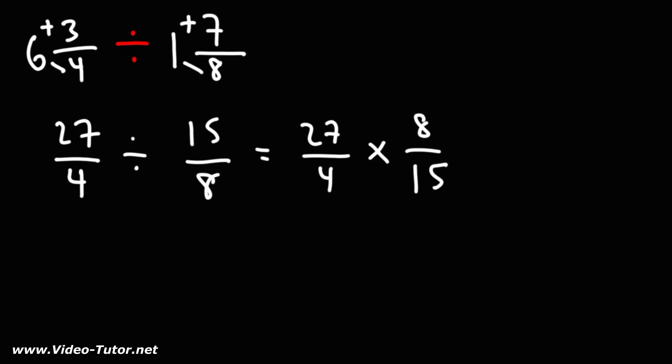Now, before we multiply across, let's see if there's anything we can cancel. 27 and 15, they share a common factor of 3. 8 and 4 share a common factor of 4.